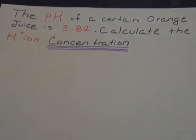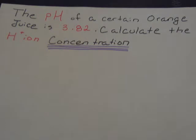So the problem reads the pH of a certain orange juice is 3.82. Calculate the H ion concentration.